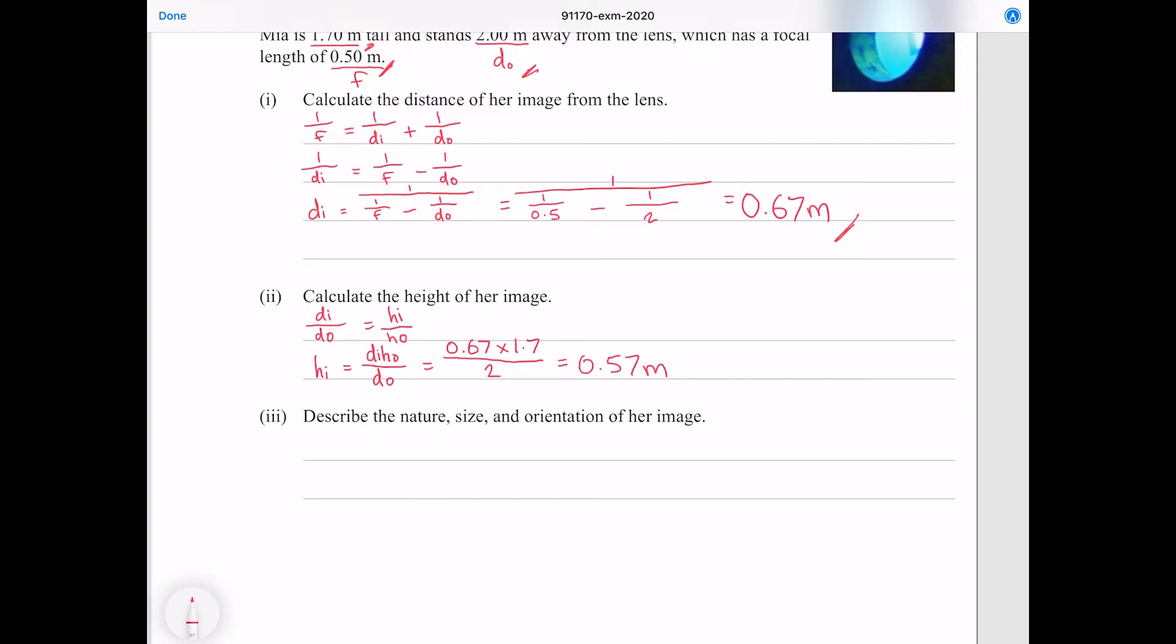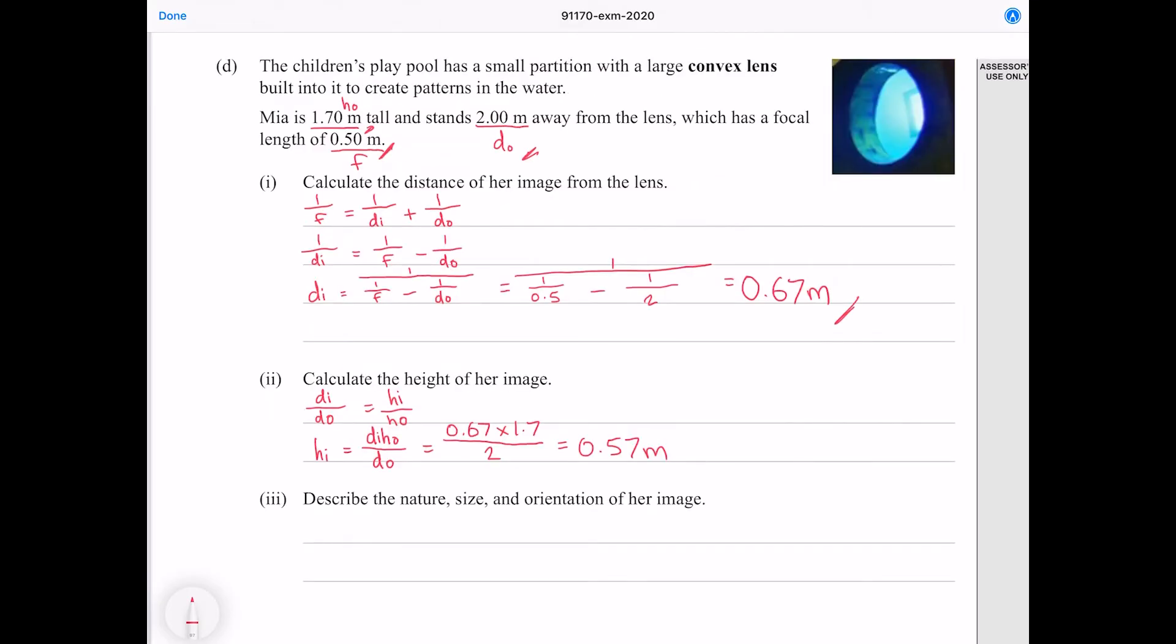The next question asks us to describe the nature, size and orientation of her image. So one way to go about these types of questions is to just remember what the lenses do at certain points. There's really not too much to remember, but if you're at a blank in an exam you should get into the practice of doing quick ray diagrams. So let's try do one now.